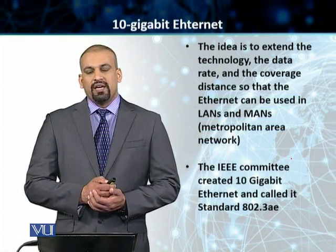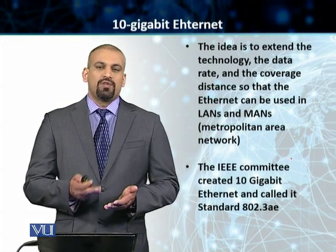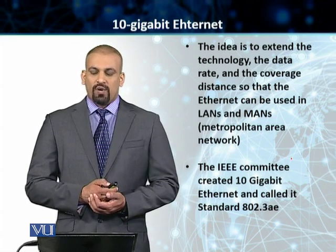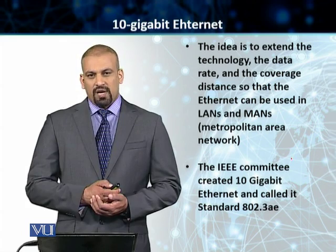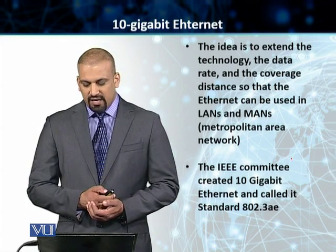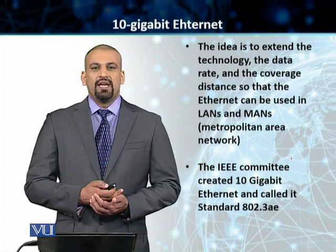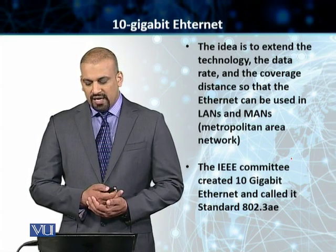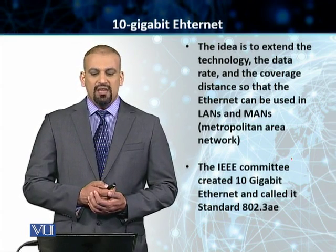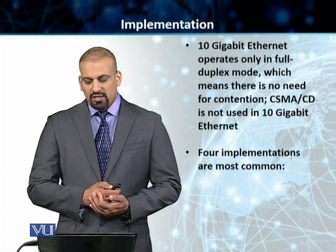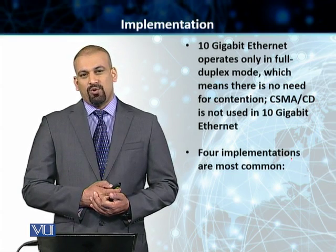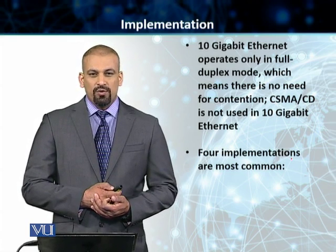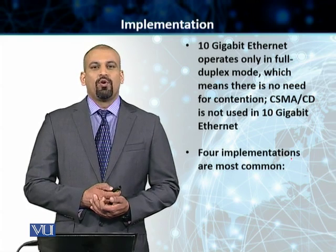We will now talk about 10-Gigabit Ethernet, the fourth generation. Most networks today support 10-Gigabit Ethernet. The idea was to increase the speed to 10 Gigabits per second, and it is used mainly in local area networks and metropolitan area networks. The Ethernet standard is called 802.3AE. In terms of implementation, it is only used in full duplex mode. 1-Gig Ethernet was still possible in half-duplex mode, although it was not used, but 10-GigE is only available in full duplex mode.